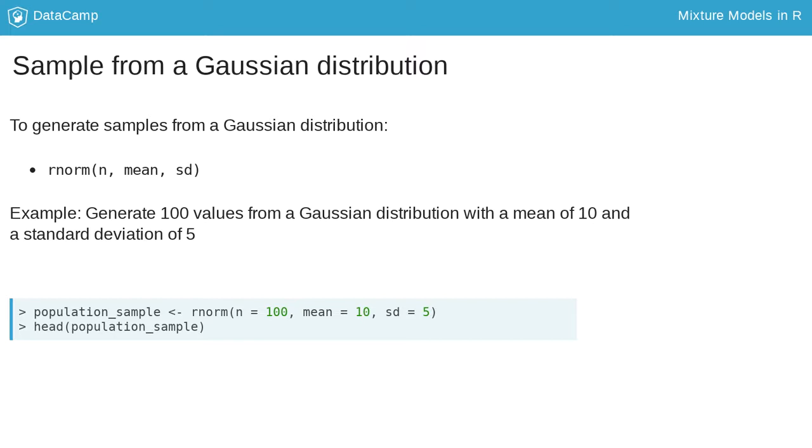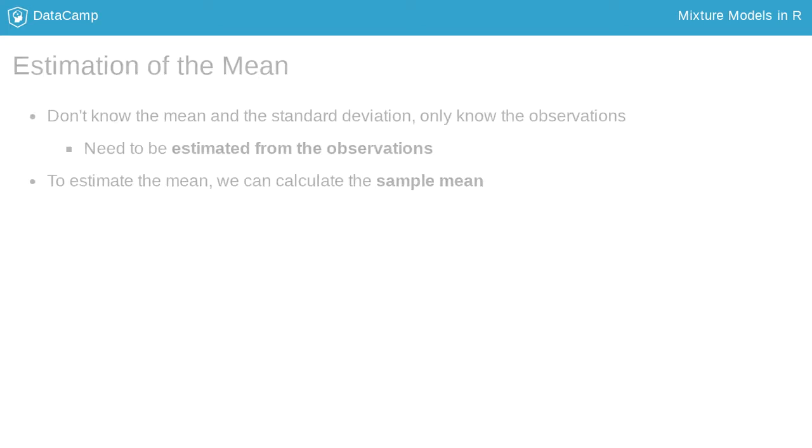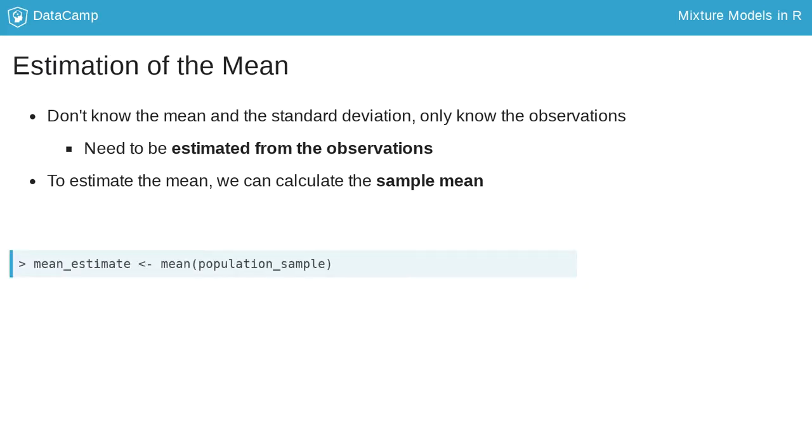Using the function head, we can see the first six values from our sample. Usually, when we collect data, we don't know the mean and the standard deviation in advance, so we need to estimate these parameters. To estimate the mean, we simply take the sample mean of the observations. For this data, the mean estimation gives us 10.36, very close to the real value of 10.